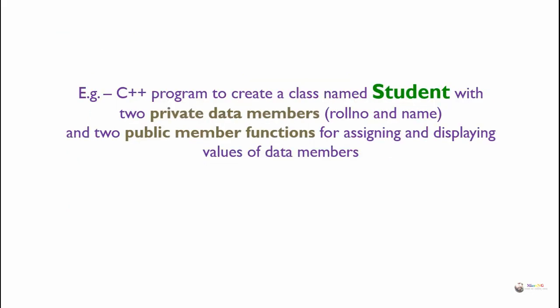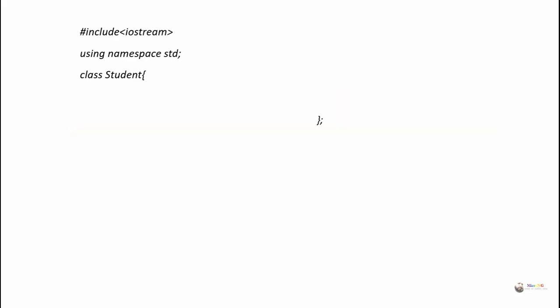Example C++ program: create a class named Student with two private data members — role number and name — and two public member functions for assigning and displaying the values of the data members. The Student class should have role number and name as private data members, and two public member functions: one to assign values for role number and name, and another to display those values. Here we have created a class named Student.